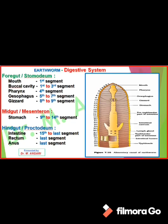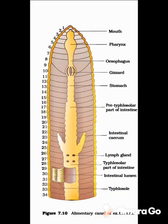Now we will study the digestive system of earthworm. The alimentary canal starts with the mouth and ends with the anus, divided into three parts: foregut (also called stomodeum), midgut (also called mesenteron), and hindgut (also called proctodeum). The foregut includes mouth, buccal cavity, pharynx, esophagus, and gizzard. The stomach is included in the midgut. Intestine, rectum, and anus are included in the hindgut.